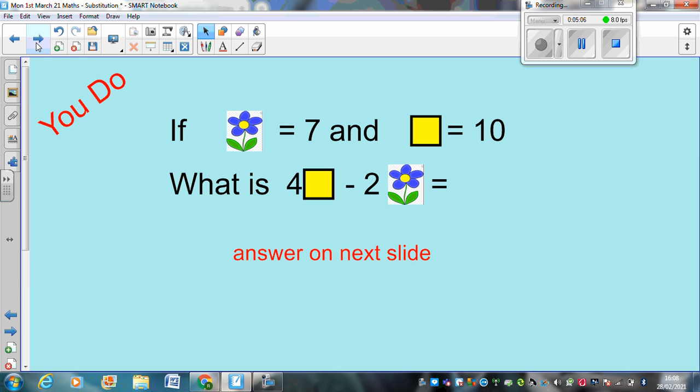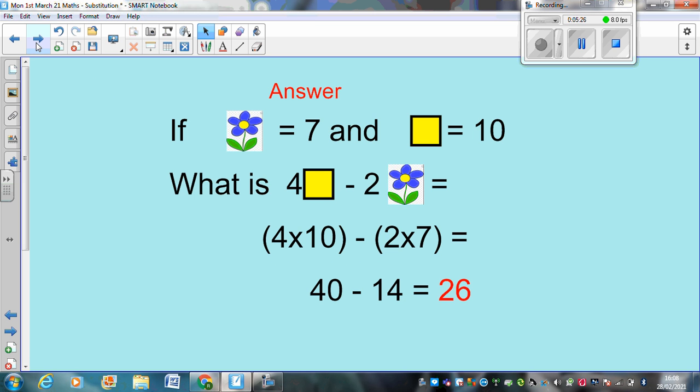Let's have a look at some more then. So, if flower equals 7 and a square equals 10, what is four square take away two flowers? Pause now and have a go at that question. Okay. Here's your answer. So, four squared is four times 10. And two flowers is two times 7. So, it's 40, subtract 14, which is 26. Did you get that? I hope so.